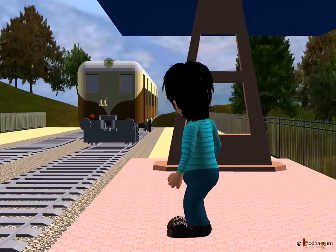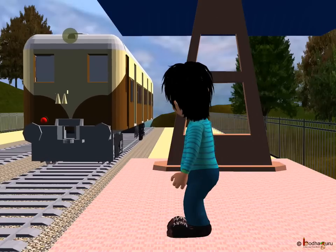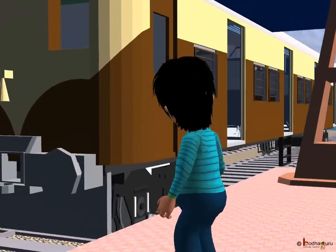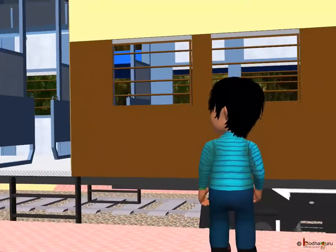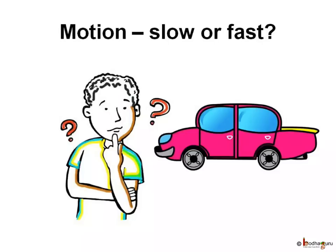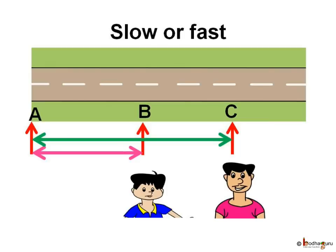We already know that an object is in motion if its position changes with time in relation to a stationary object. Some objects have slow motion while some others have fast motion. The distance moved by objects in a given interval of time can help us to decide which one is faster or slower.